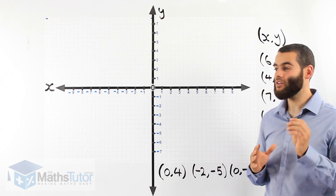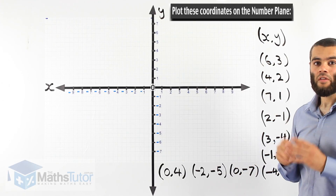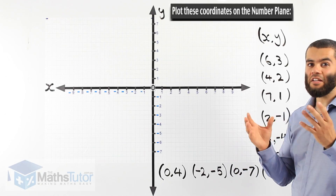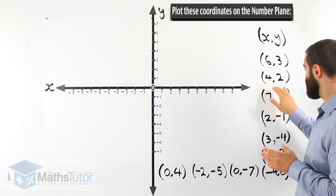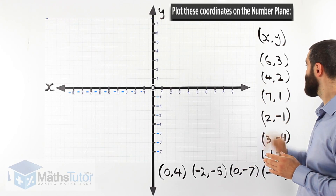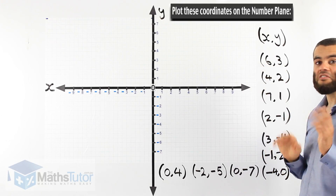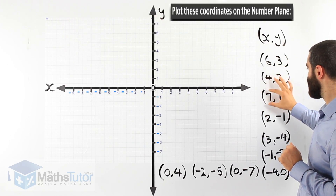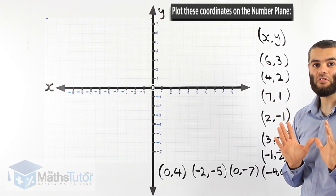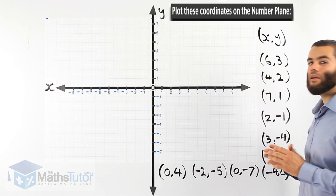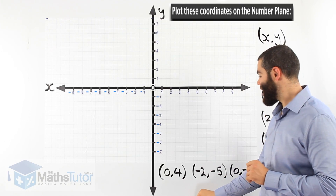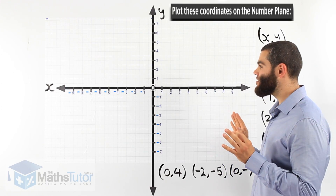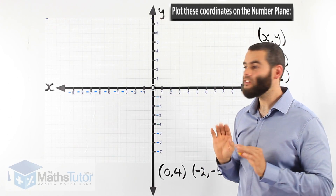Coordinates are written x then y — like the alphabet, x comes first then y comes second. They are always written in brackets with a comma in between. The x always comes first and the y comes second. Let's plot the first coordinate: (6, 3). We start with the x-axis, which is the horizontal line.